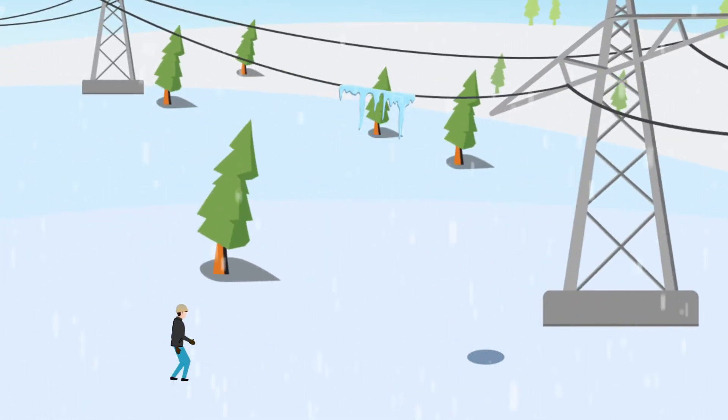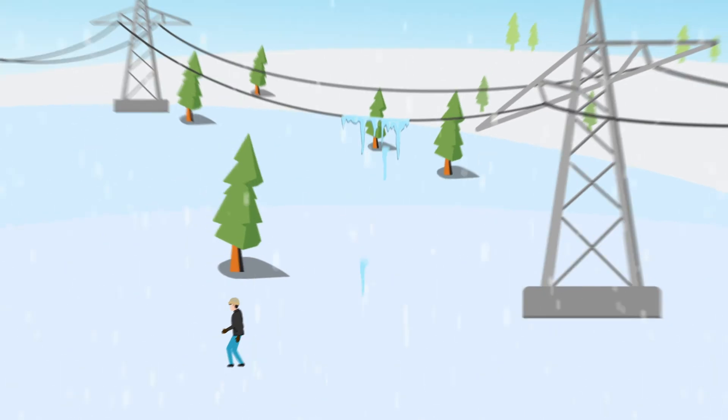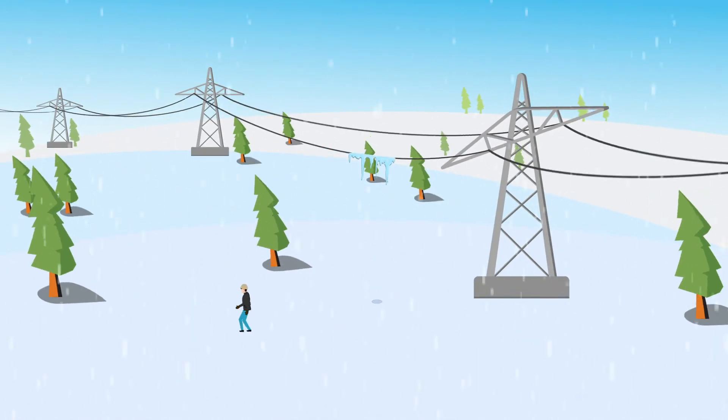If you see galloping lines, remember to stay clear. Broken ice or equipment falling from the lines could hurt you.